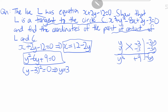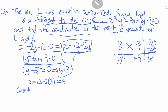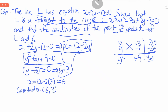Plugging y equals 3 back into x equals 12 minus 2y gives x equals 12 minus 2(3) equals 6. So the coordinates of the point of contact are (6, 3).